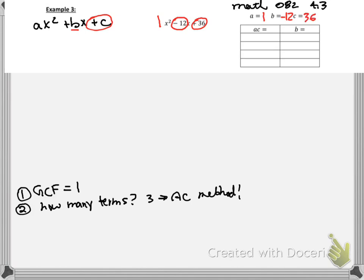Okay, so AC is 1 times 36, which is 36. And my B is negative 12. So 36 is a number that has many factors, if you think about it.